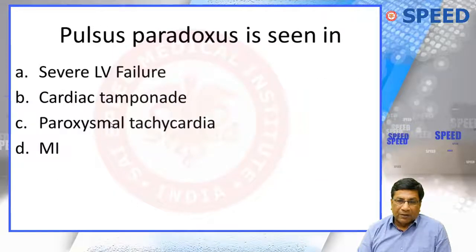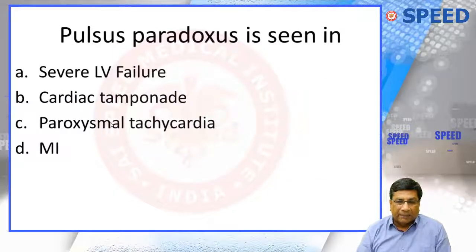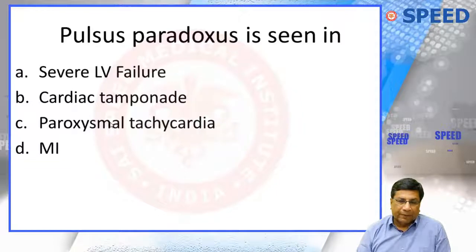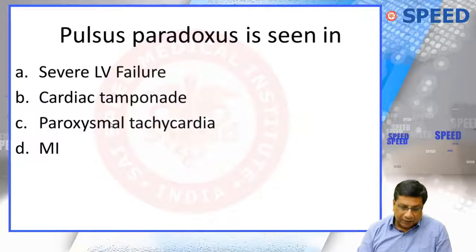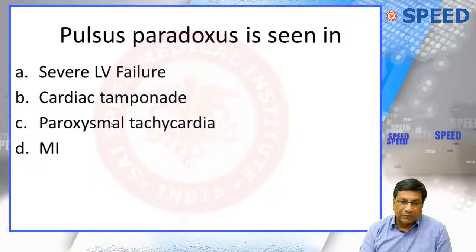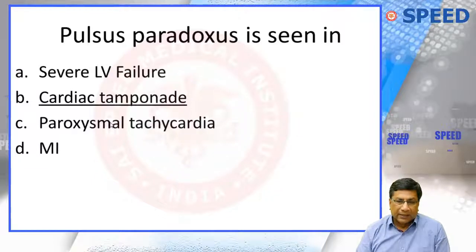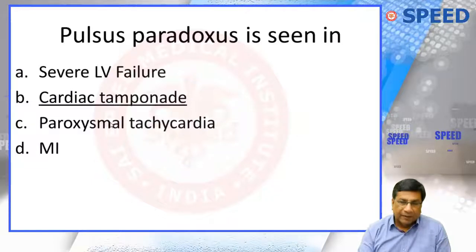Pulsus paradoxus is seen in cardiac tamponade, severe LV failure, and paroxysmal tachycardia. The condition which produces pulsus paradoxus and is a cardiac emergency is cardiac tamponade.